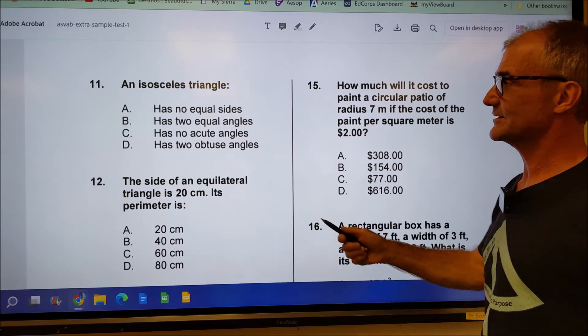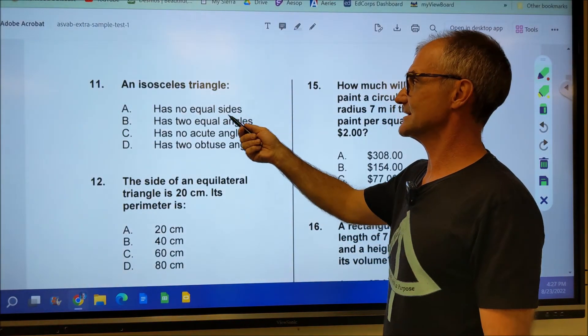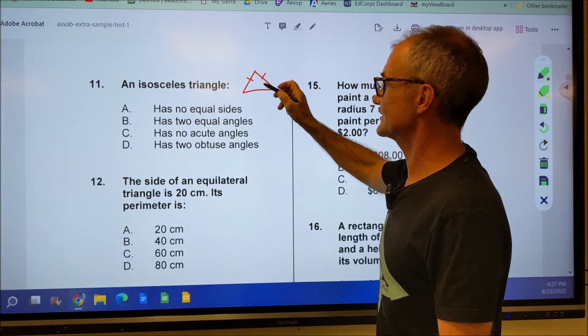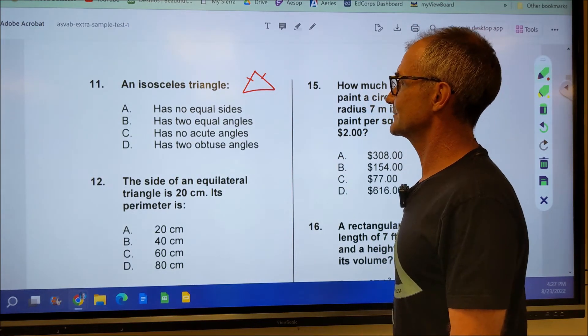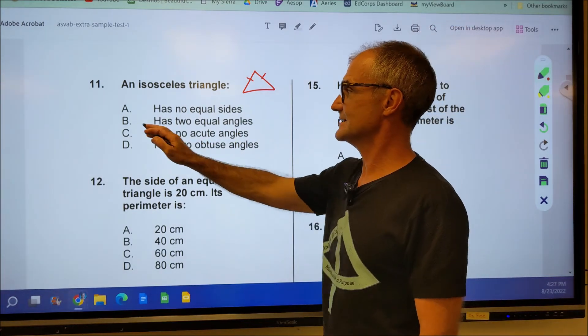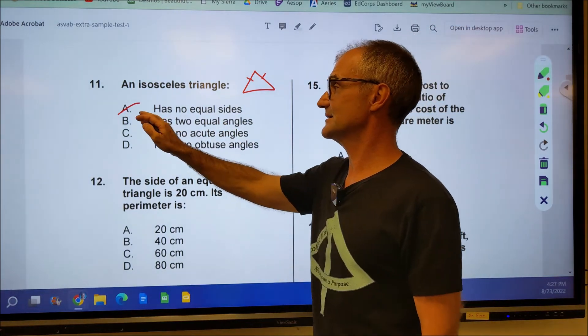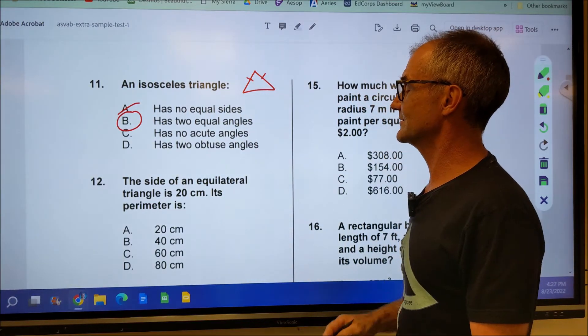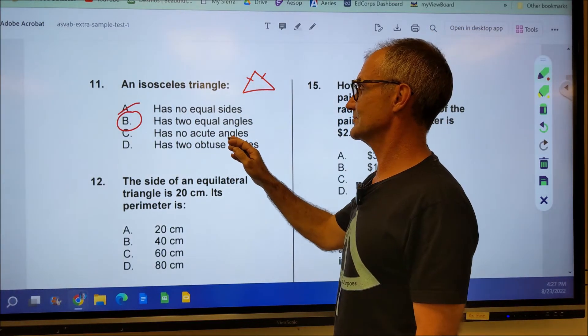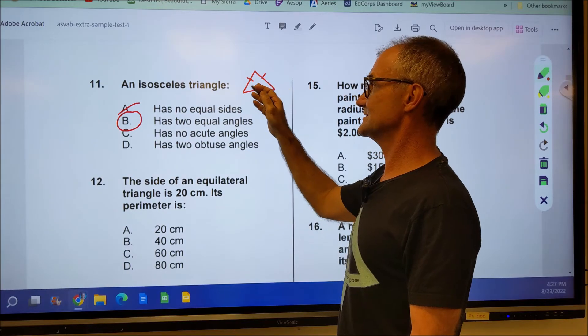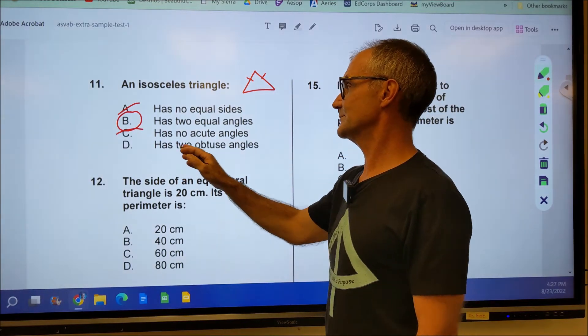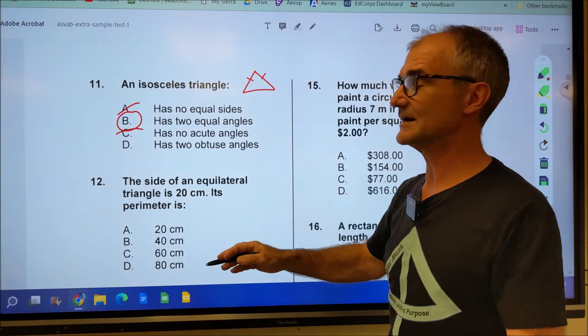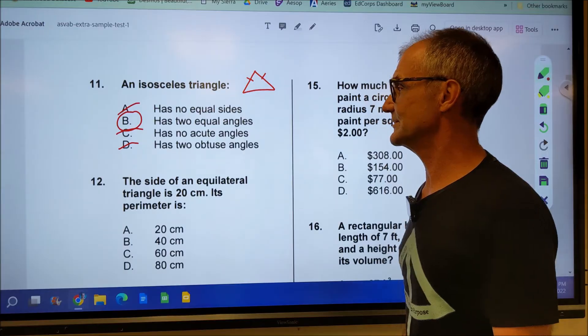Really more math vocabulary here. Number 11, an isosceles triangle. By definition, an isosceles has two equal sides and two equal angles. Has no equal sides. That doesn't make sense. Has two equal angles. That is true. Because if the sides are equal, the angles opposite them are. Has no acute angles. That is not true. Those could be 60s. Has two obtuse angles. That's impossible. Remembering that obtuse is greater than 90. So that's impossible. So it's answer B.